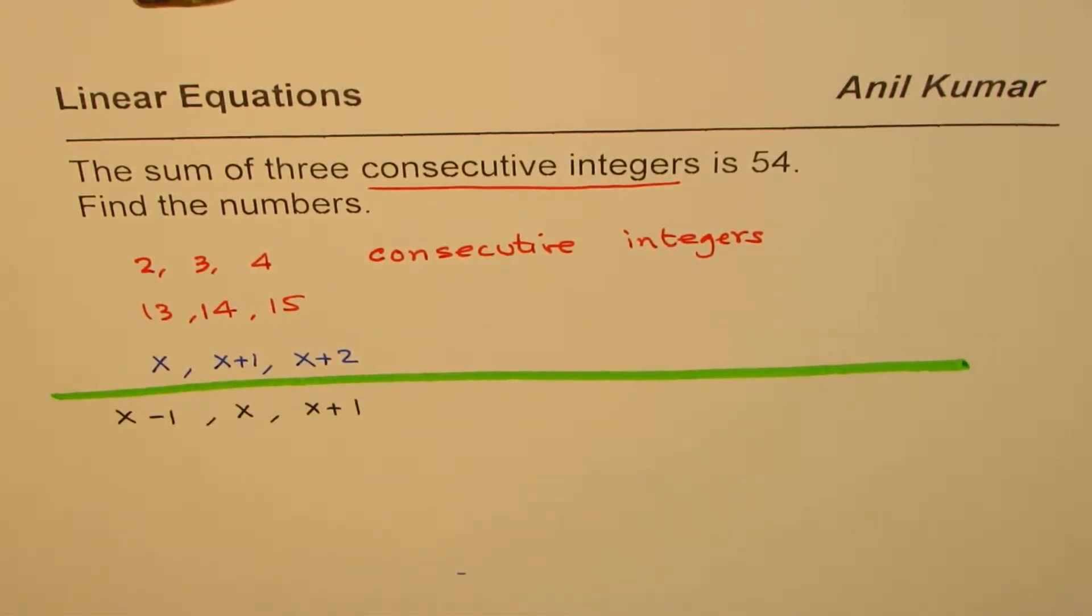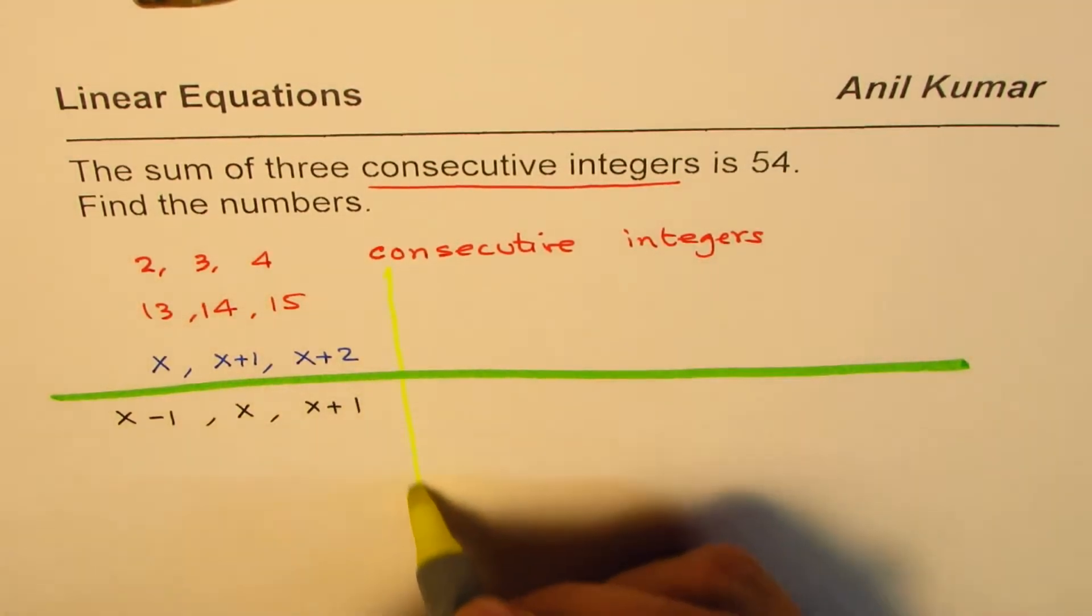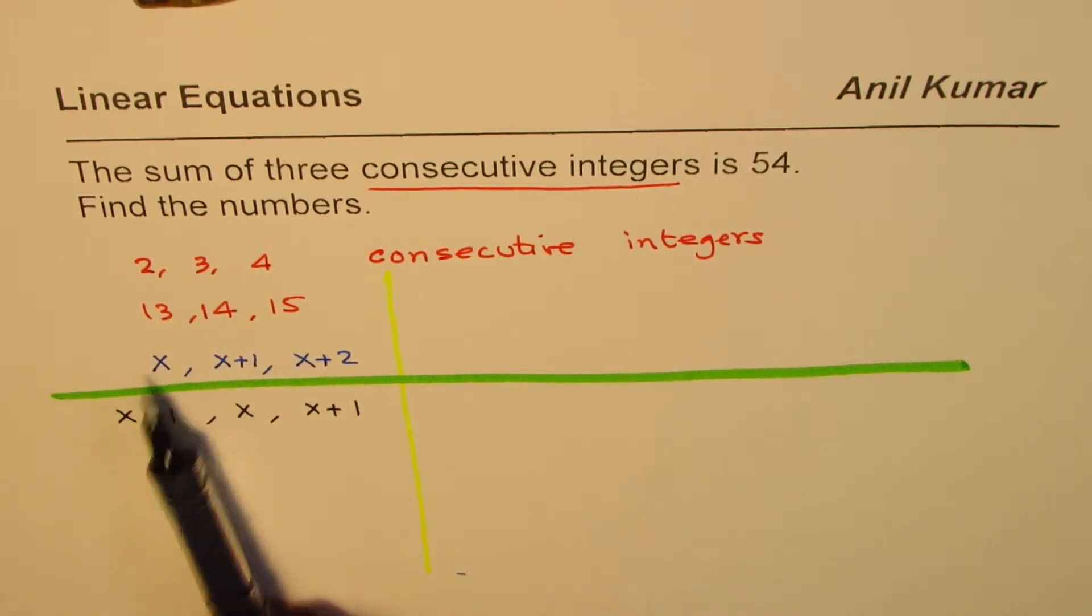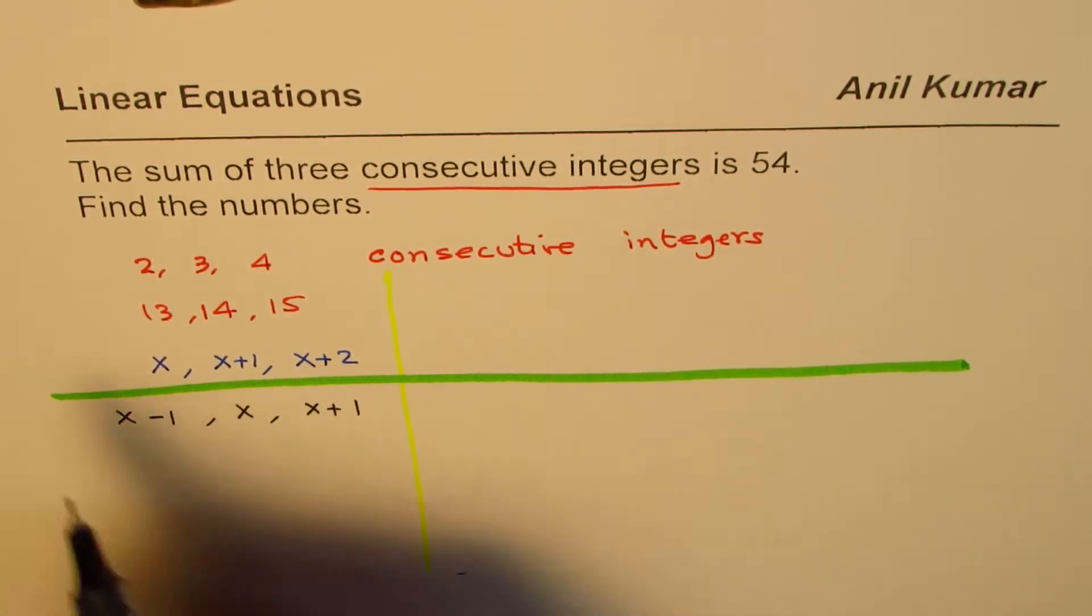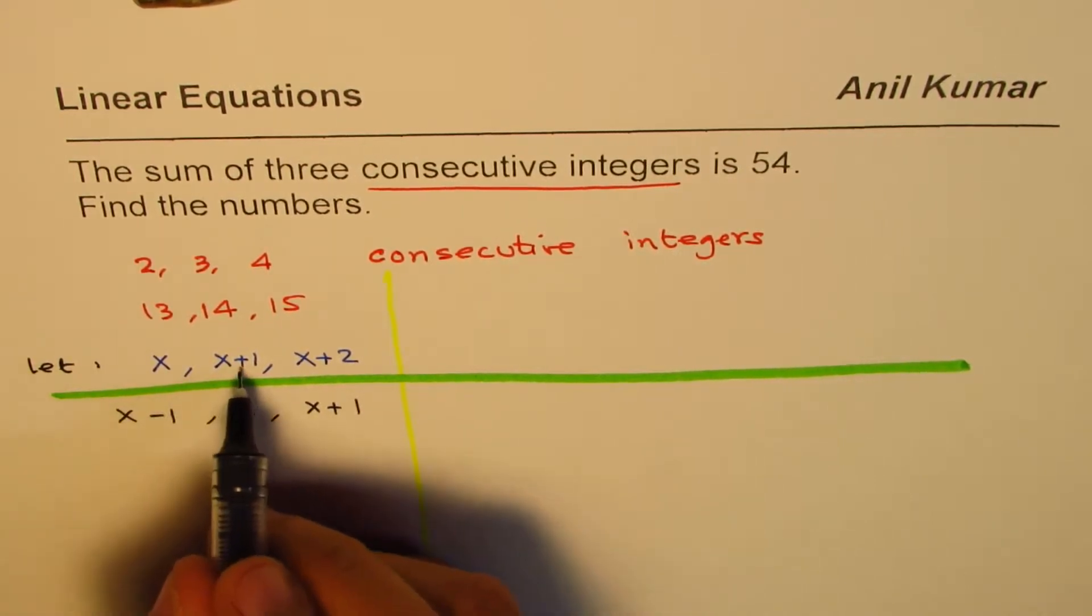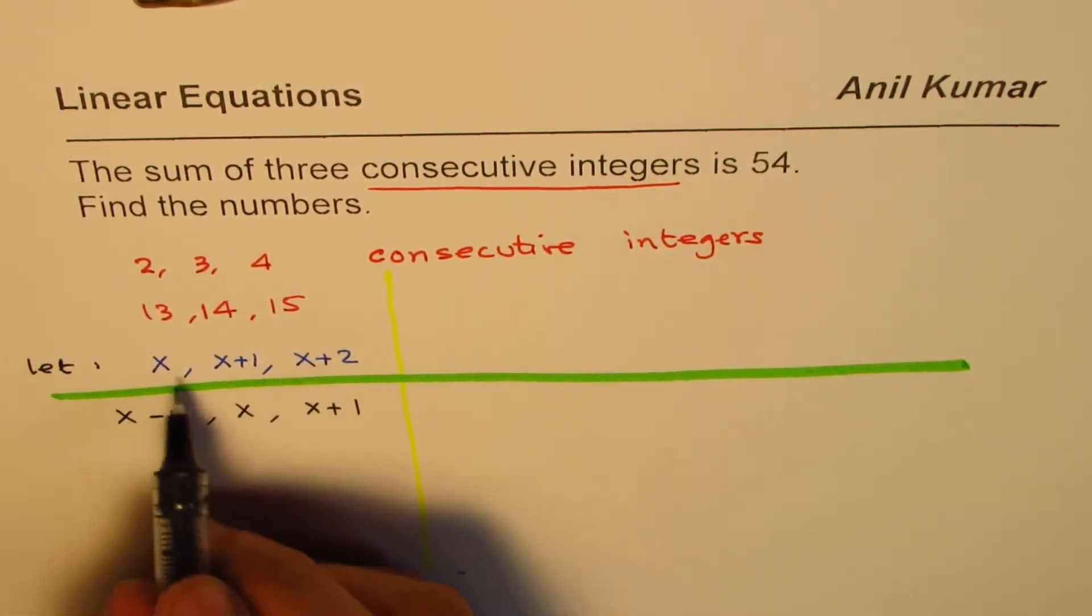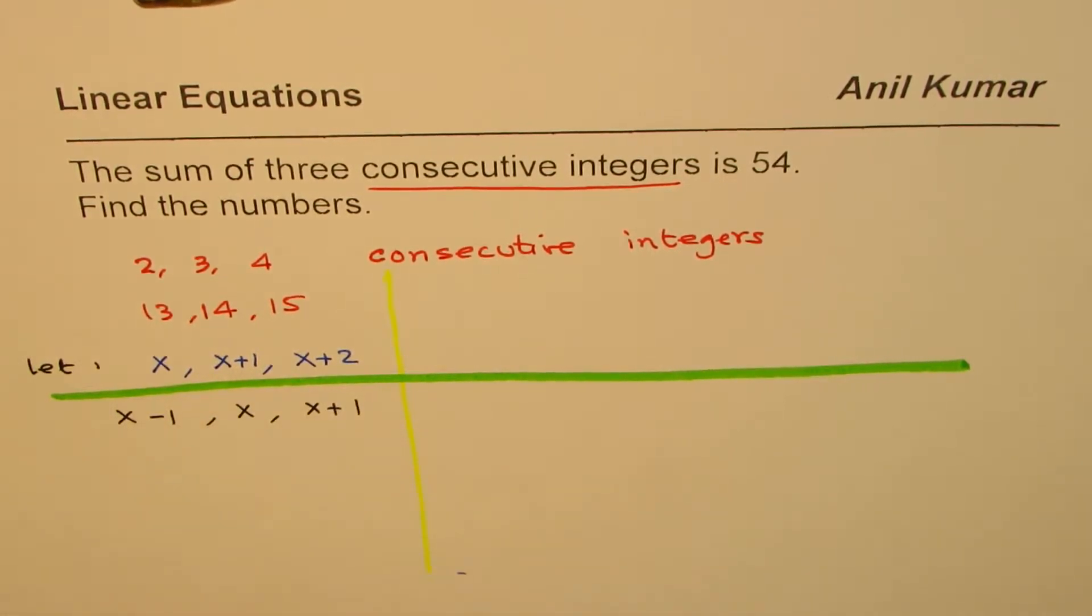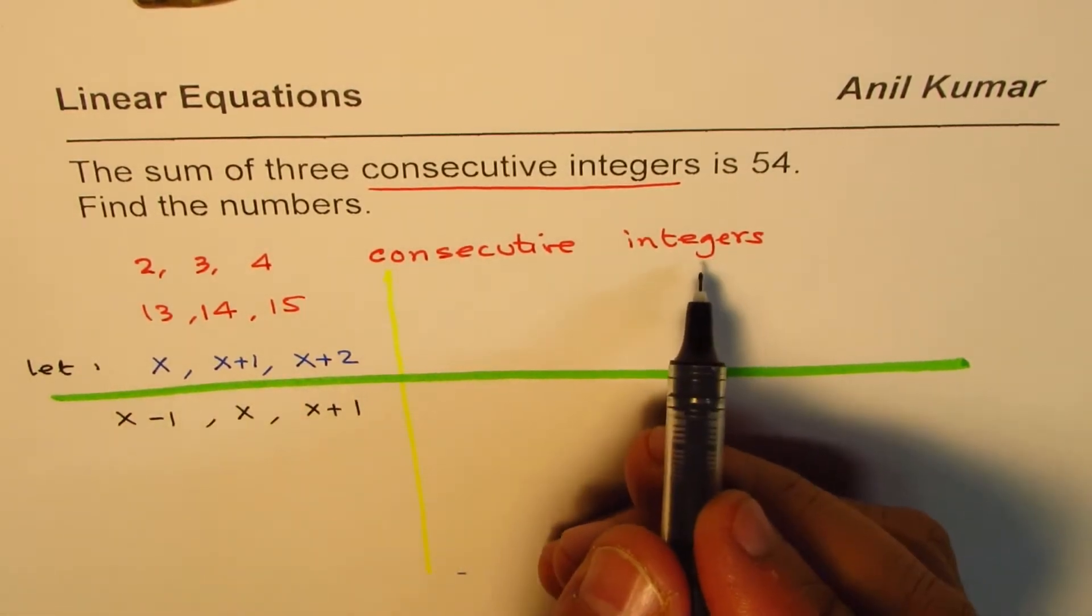So, in the first case, we'll do it on the right side. We'll define the variable x and let, we say let three numbers be x, x plus 1, x plus 2. So, these are our three numbers. They are consecutive since they increase by one each time. That is what consecutive integers mean.